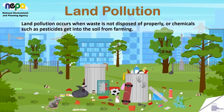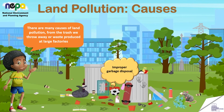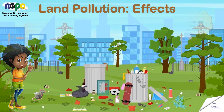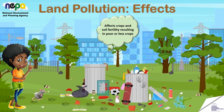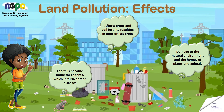Land pollution occurs when waste is not disposed of properly, or chemicals such as pesticides get into the soil from farming. Causes include trash we throw away or waste produced at large factories, improper garbage disposal, mining, and chemicals and pesticides from farming. Effects include damage to crops and soil fertility resulting in fewer crops, landfill becoming home for rodents which spread diseases, and damage to the natural environment and the homes of plants and animals.